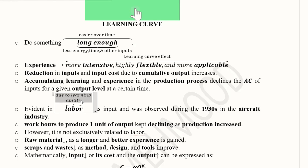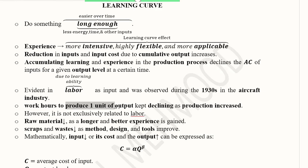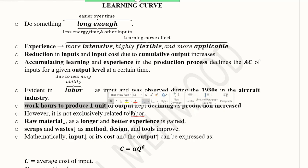In recent times, computers are artificially intelligent, and AI and machine learning are prominent developments, but the very basic theory of the learning curve stems from the learning ability of labour. It was observed in the aircraft industry where workers were able to produce more than before. The work hours to produce one unit of output kept declining as production increased, meaning the average cost declined.